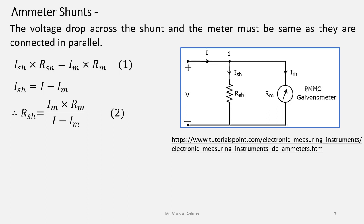we get the equation for RSH equals Im into Rm upon I minus Im. If you divide numerator as well as denominator by Im, then we get the equation as RSH equals Rm upon I upon Im minus 1.